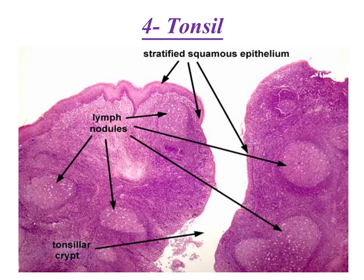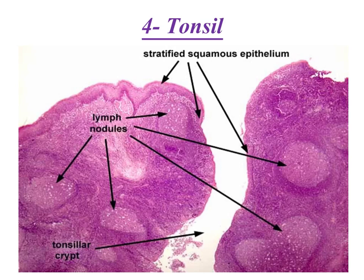This is a picture of the tonsil. The tonsil is characterized by having a covering of the mucous membrane lining the oral cavity, which is formed of non-keratinized stratified squamous epithelium. This epithelium dips into the crypt and lines it also. On the other side it has an incomplete capsule. So from one side we have the non-keratinized stratified squamous and at the base we have the incomplete capsule.